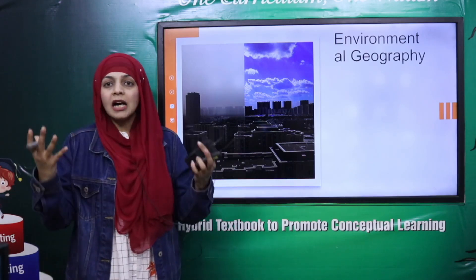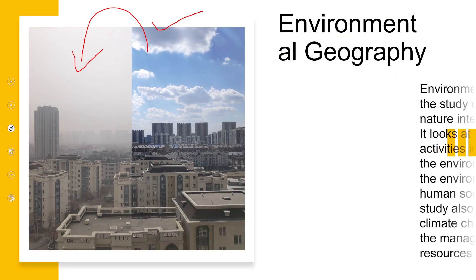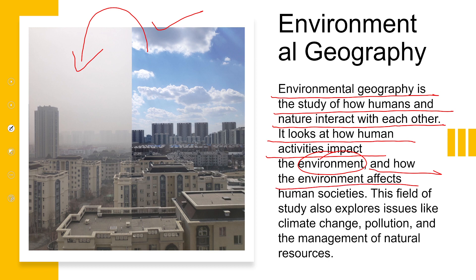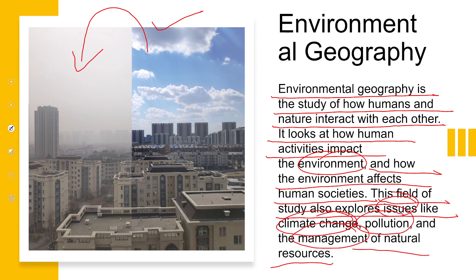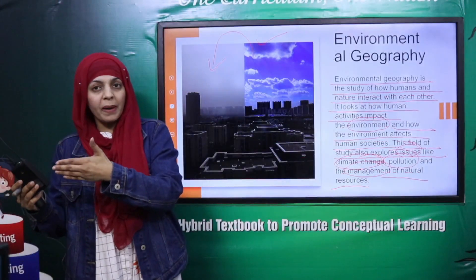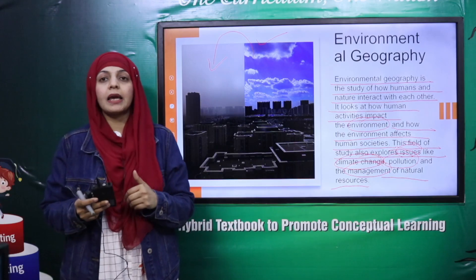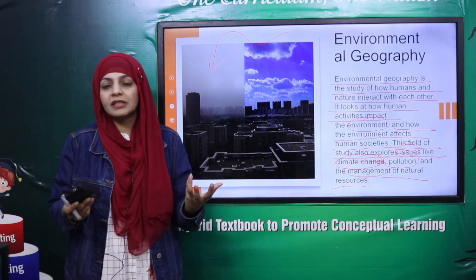Then comes Environmental Geography. In Environmental Geography we study what our natural environment is like and how it has changed due to human interaction. Environmental Geography is the study of how humans and nature interact with each other. It looks at how human activities impact the environment and how the environment affects human societies. This field also explores issues like climate change, pollution, and management of natural resources. These three types of Geography will be studied at different stages in your book.